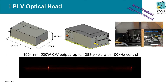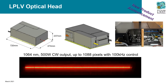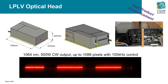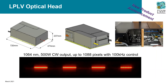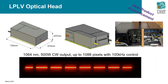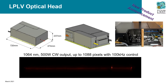Our LPLV optical head is a complete high-power patterning solution in a box. It is capable of 500 watts output at 1064 nanometers with 100 kilohertz refresh rates. The video at the bottom showcases the patterning possible with this device. Please see our website for information as well as guidance on how to incorporate the optical head into a system.